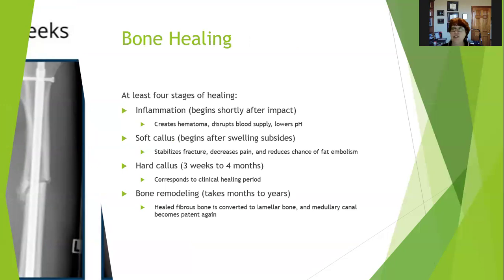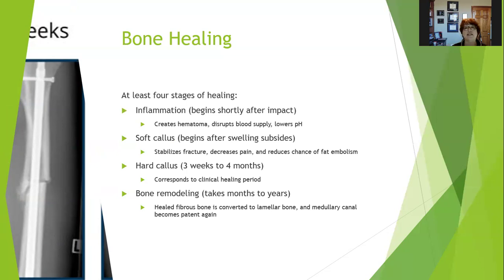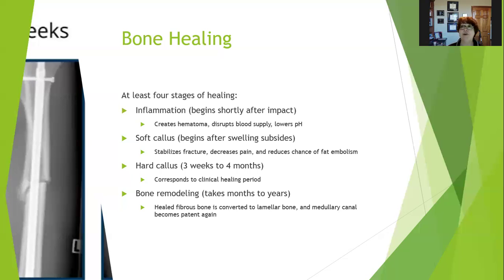Bone healing is great because bones have a great blood supply, and there are at least four identifiable stages. Inflammation shortly after impact creates a hematoma, disrupts the blood supply, and lowers the pH. A soft callus begins after swelling subsides — it stabilizes the fracture, decreases pain, and reduces the chances of fat embolism. Hard callus forms from three weeks to four months, which corresponds to the clinical healing period for a bone fracture — and you can see these on an x-ray. Bone remodeling takes months to years: healed fibrous bone is converted to lamellar bone and the medullary canal becomes patent again. Our bones are always remodeling through Wolff's Law — bones change in response to the stresses you put on them. So loading is important once bone healing is confirmed, with protected loading.